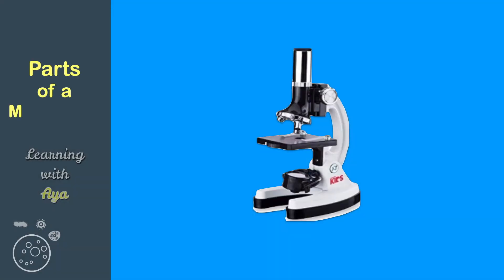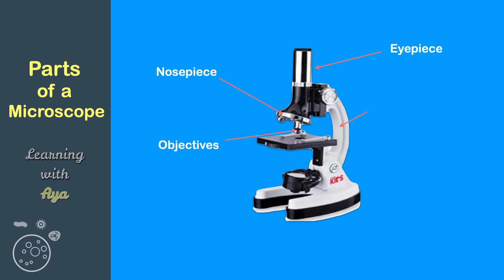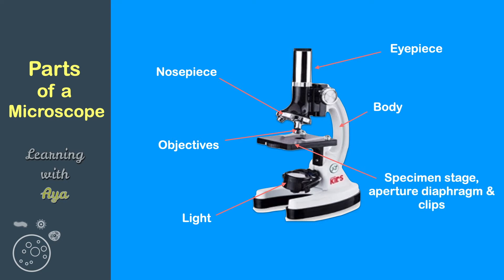Parts of a microscope: nosepiece, objectives, body, light, specimen stage, diaphragm, clips, and base.